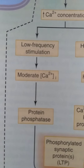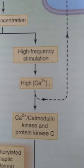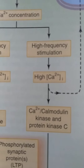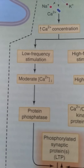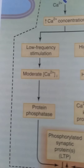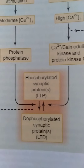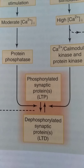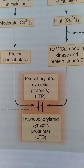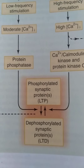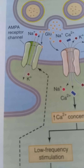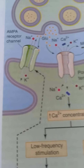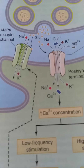Moderate rise in calcium activates protein phosphatases, whereas high rise of calcium activated calcium calmodulin kinase and protein kinase C. In long-term depression, with low-frequency stimulation and moderate calcium rise, activation of protein phosphatases leads to dephosphorylation of synaptic proteins. As a result, AMPA receptors are dephosphorylated, no longer inserted into the membrane, and are instead internalized — producing long-term depression.